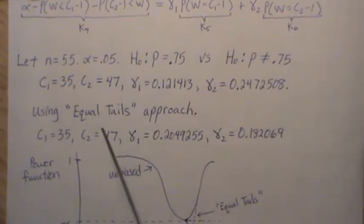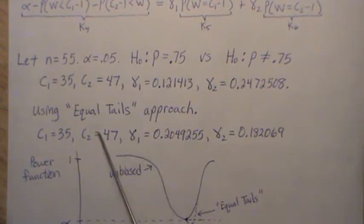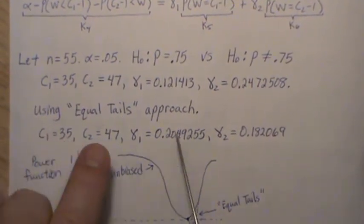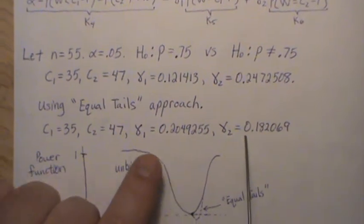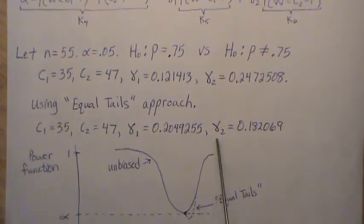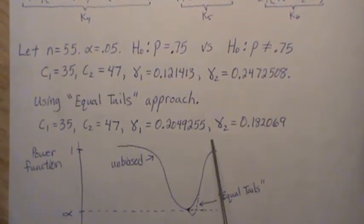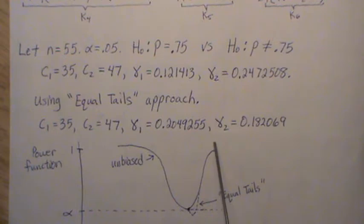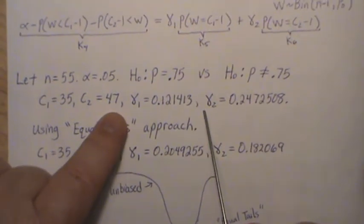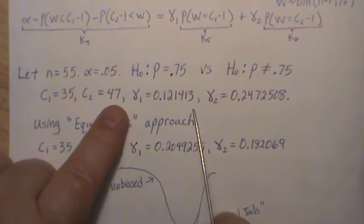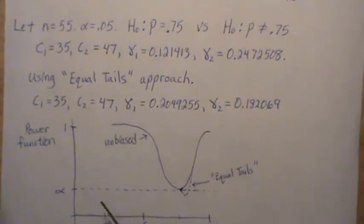Now, using the equal tail approach, it came up with this. The C1 and C2 is the same, but the gammas are a little bit different. And these make the type one error in the left tail alpha over two and the type one error in the right tail alpha over two. In this case, it's not equal probability on the right and the left. It's close.